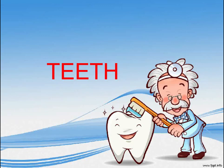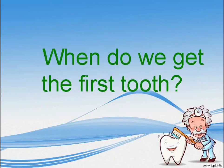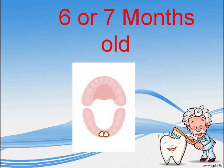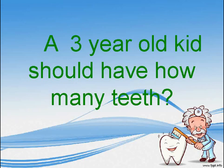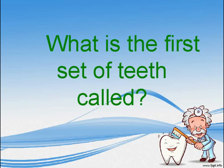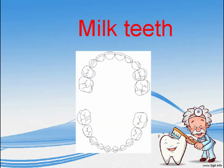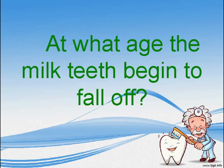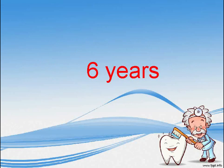Teeth. When do we get the first tooth? Six or seven months old. A three-year-old kid should have how many teeth? Twenty. What is the first set of teeth called? Milk teeth. At what age do the milk teeth begin to fall off? Six years.